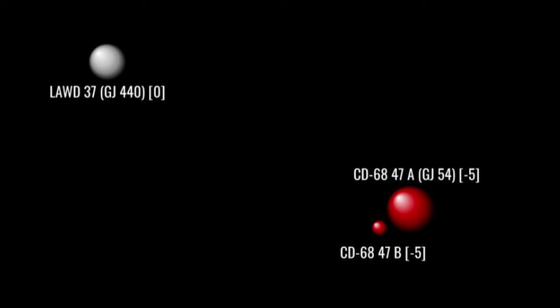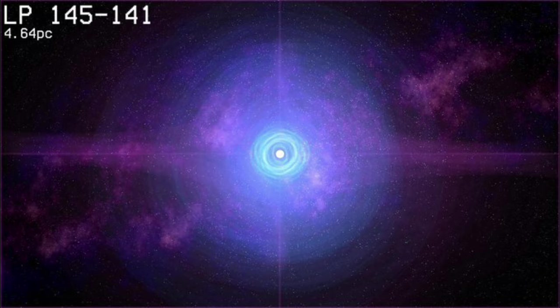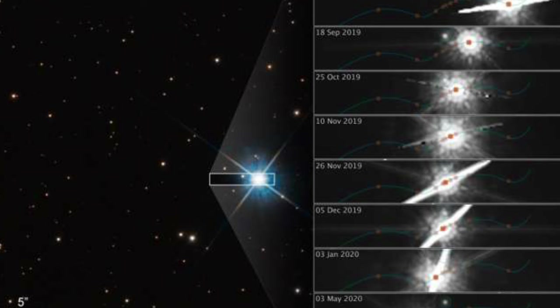Further rimward and 5 parsecs north, we arrive at LP 145-141, also known as Gliese 440, after von Mannen's star, the closest solitary white dwarf to the sun. In 2019, a freak microlensing event, in which 145 passed briefly in front of a more distant star, magnifying its light, allowed the Hubble telescope to measure its mass precisely at 56% that of the sun.